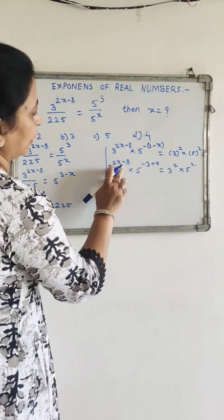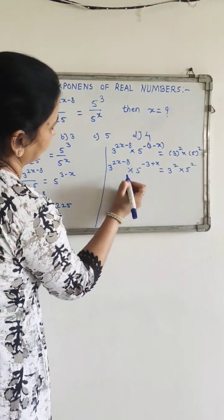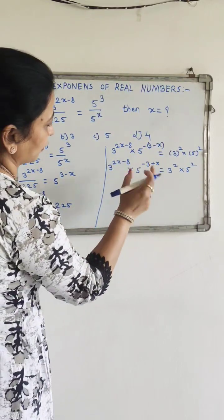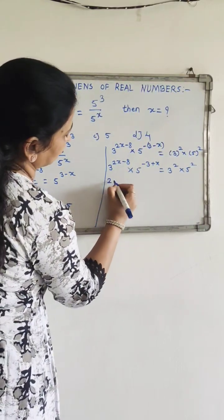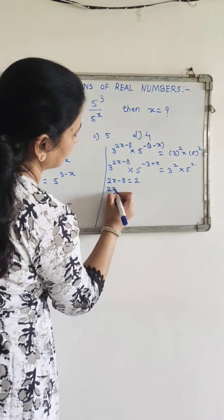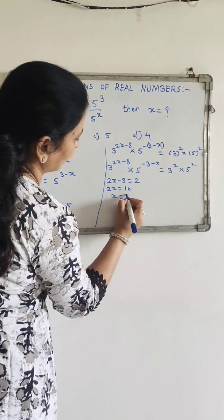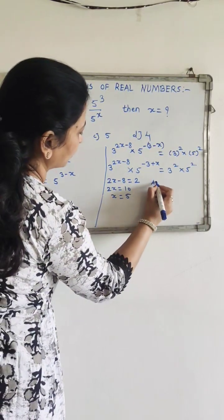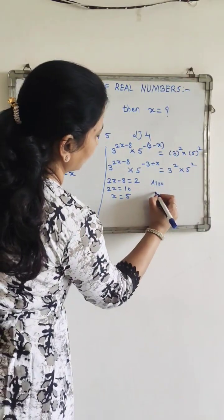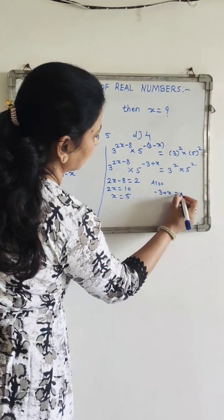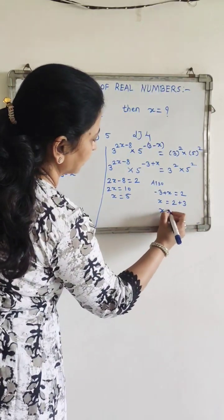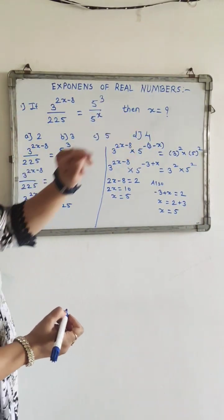Comparing right-hand side to the left-hand side: since base 3 is the same on both sides, exponents must be equal, so 2x minus 8 equals 2, giving 2x equals 10 and x equals 5. Also, for base 5, since base is the same, the powers are equal: minus 3 plus x equals 2, so x equals 2 plus 3, which is x equals 5.